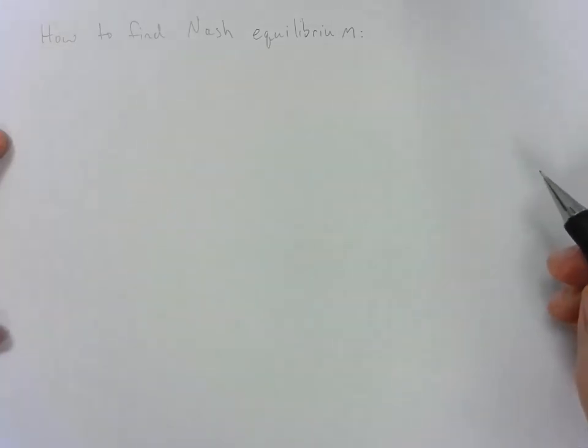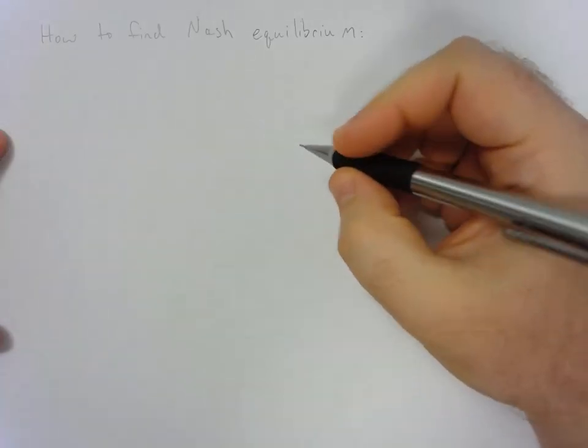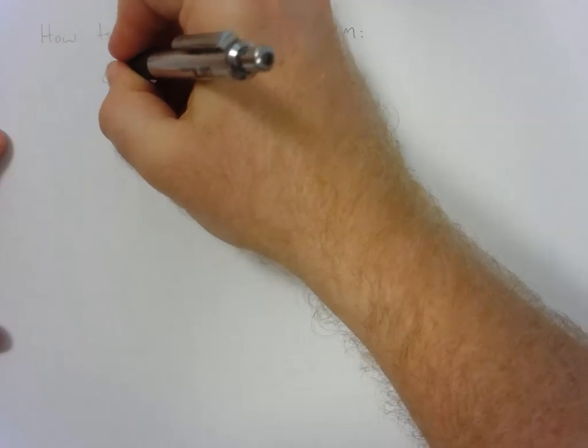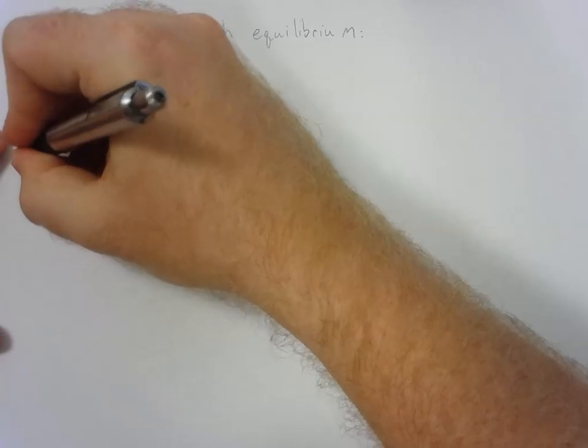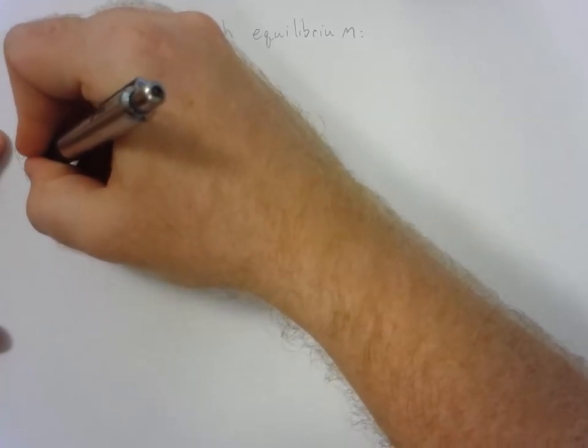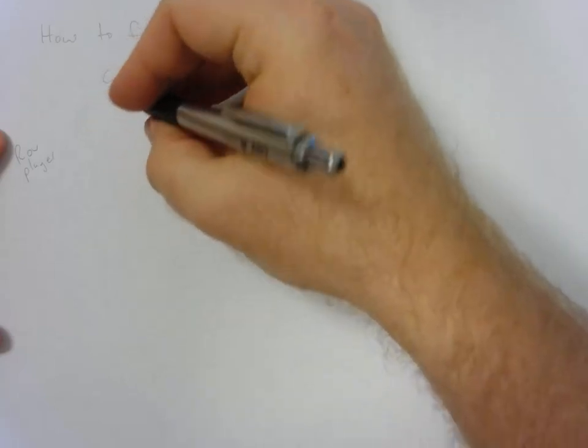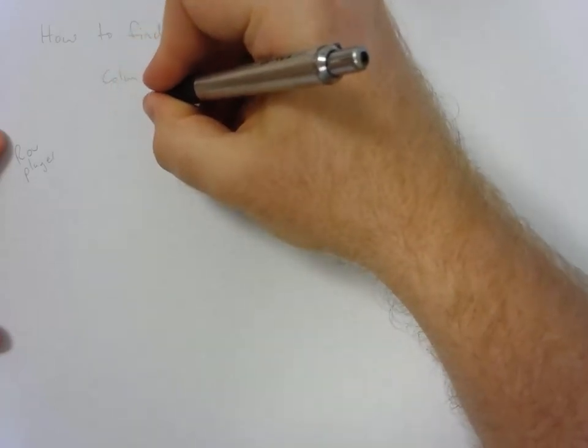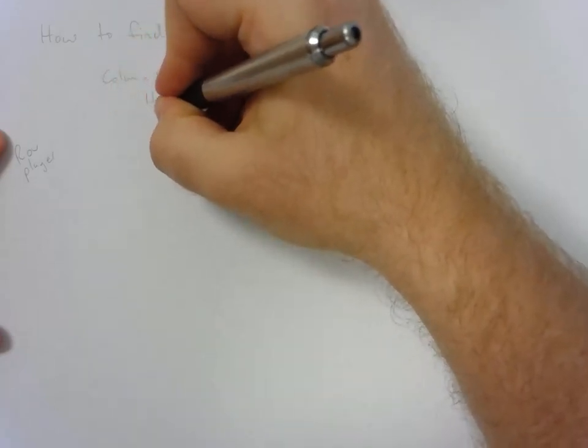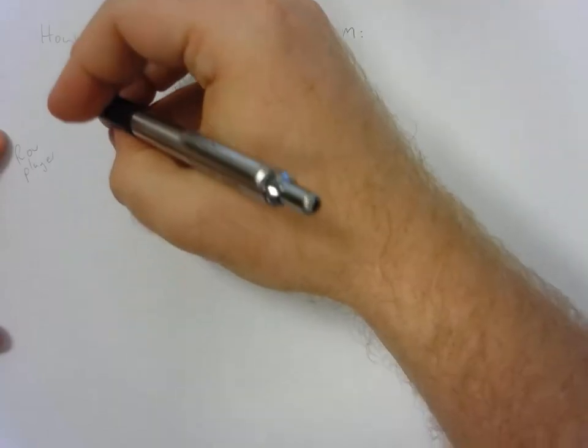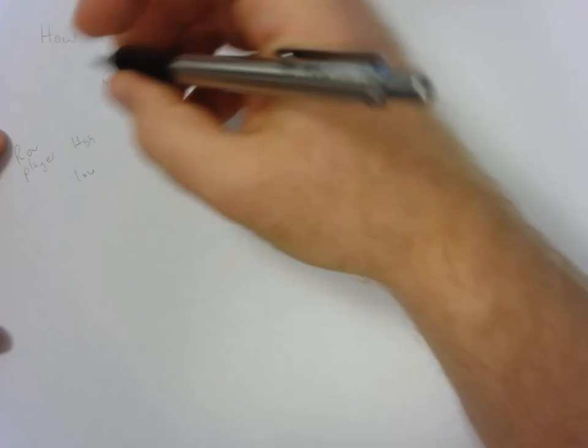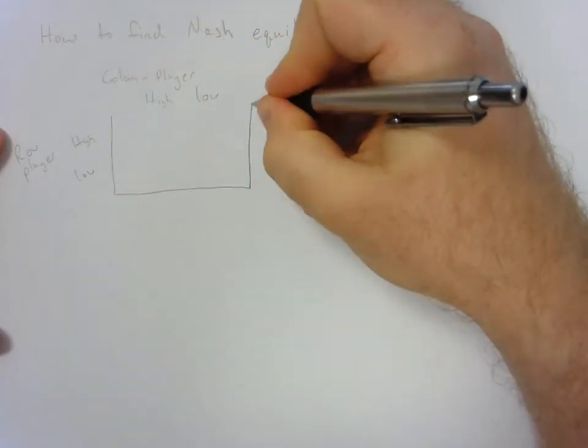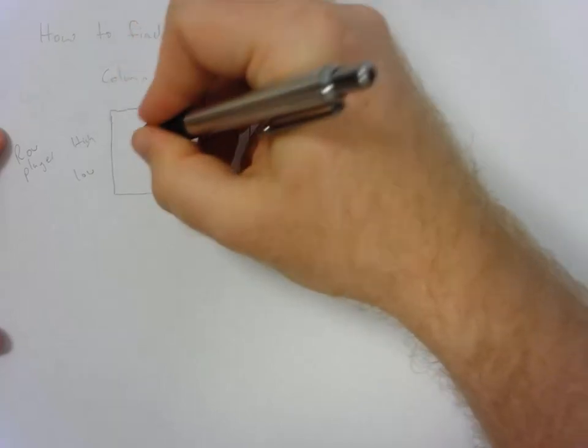So first what I'm going to do is set up your standard payout matrix just so you can remember what it looks like. I'm going to call this guy a column player and then this guy on the side we will call row player. We'll have the two choices they can make, so here I'm going to go with high and low, and then here I will also have high and low, and then we will get our payoff matrix.